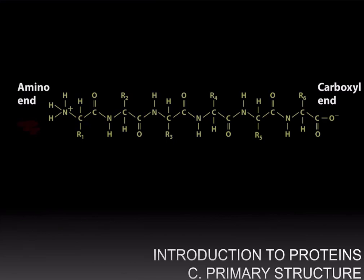And one end is called the amino end, which has not been polymerized at the amino group. And the other end is called the carboxyl end, where the amino acid has not made a peptide bond at its carboxyl end.